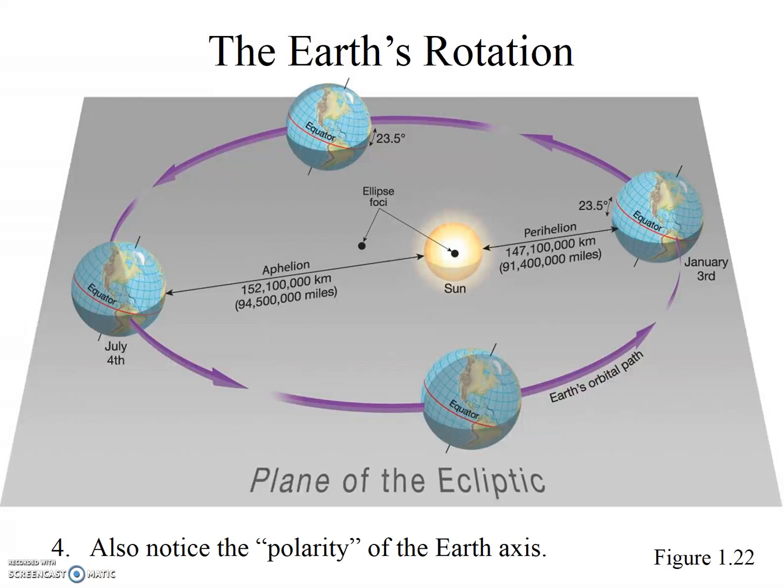Fourth, notice the polarity of the Earth's axis. By polarity, we note that the Earth's axis is always pointing in the same direction. Not only is it tilted at 23.5 degrees, but it is also always pointed in the same location out into outer space. Coincidentally, if you go out from the North Pole into space, the Earth's axis points pretty much right at what we call the North Star.